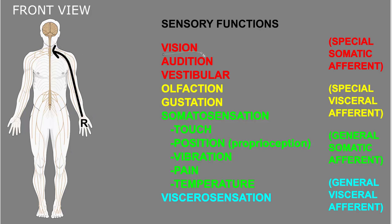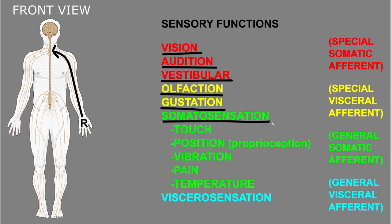Vision occurs through the eyes. Audition or hearing occurs through the ears. There's a sense from the inner ear called vestibular sense, which involves head movements and the direction of gravity. Olfaction or smell occurs through the nose. And gustation or taste occurs mostly through the mouth.